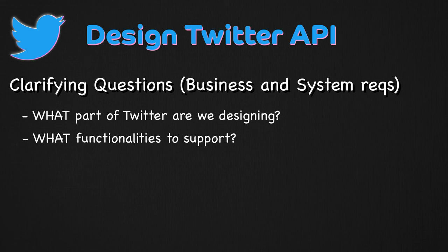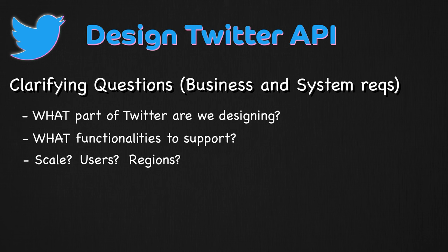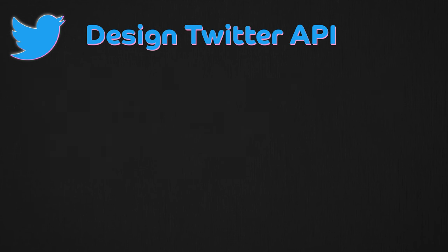Once you have clarified the functional requirements, you can then talk about system requirements such as the scale of the system, the number of users who will be interacting with your API, from what regions users will be consuming your API, and what kind of data exchange or payload is going between the API — all those things you can touch on during your system requirements. Without this information, you can't really design an API, and once you have it all, you can jump into your actual solution.